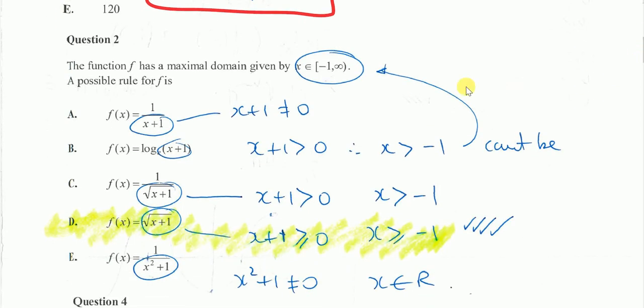In question number two, a possible domain is this. So what rules might fit? Well, I've gone through each of these.